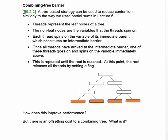We use intermediate nodes so that all threads don't have to spin on a single can-go variable. The actual threads are down here at the leaf level of the tree. The nodes above them represent variables that the threads spin on. Each thread spins on its immediate parent, which constitutes an intermediate barrier.